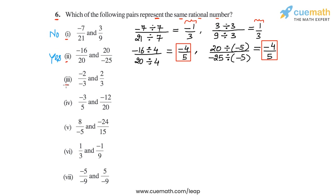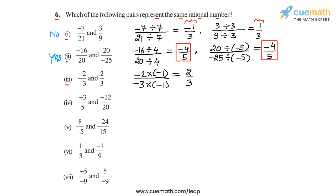In part 3, we have -2/-3 and 2/3. Reducing -2/-3 to standard form: the HCF of 2 and 3 is 1, so we simply make the denominator positive by multiplying by -1, giving 2/3. This is the same as the second rational number 2/3, so both numbers represent the same rational number. The answer is yes for part 3.